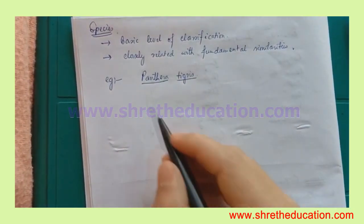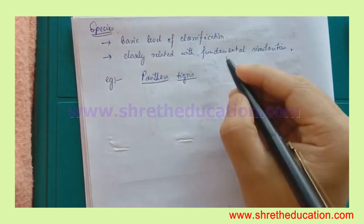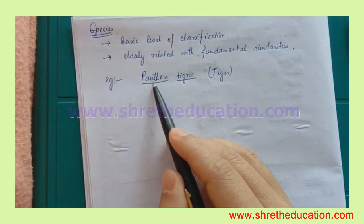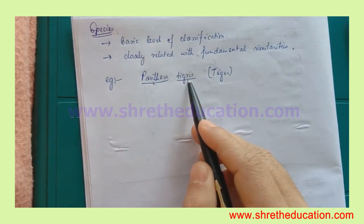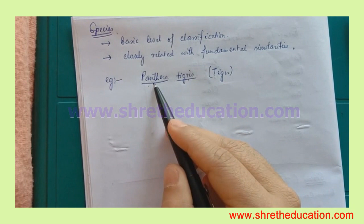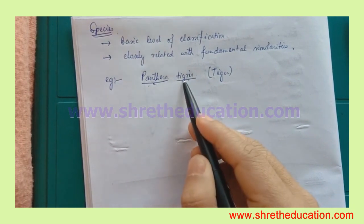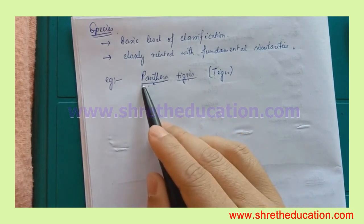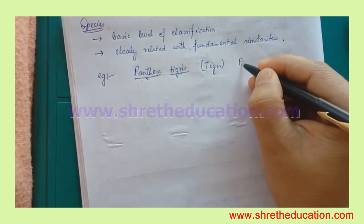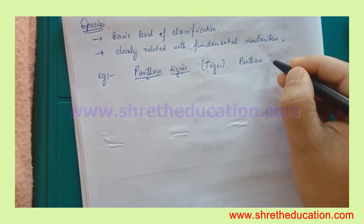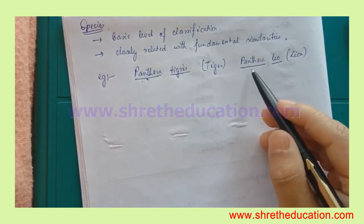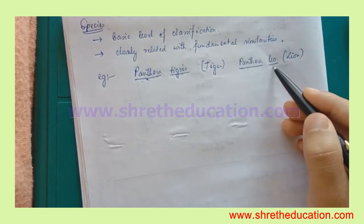The scientific name of the tiger is Panthera tigris — 'Panthera' is the generic name and 'tigris' is the specific epithet. The lion's scientific name is Panthera leo — 'Panthera' is again the generic name and 'leo' is the specific epithet. Both tiger and lion share the same genus, Panthera.